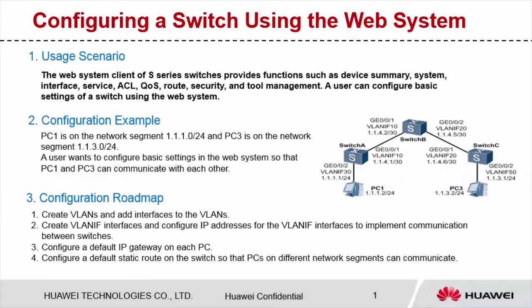The configuration roadmap is as follows. Create VLANs and add interfaces connected to PCs to the VLANs so that packets from the PCs can pass through the interfaces. Create VLAN IF interfaces and configure IP addresses for the VLAN IF interfaces to implement communication between switches. Configure a default IP gateway on each PC, and configure a default static route on the switch so that PCs on different network segments can communicate.